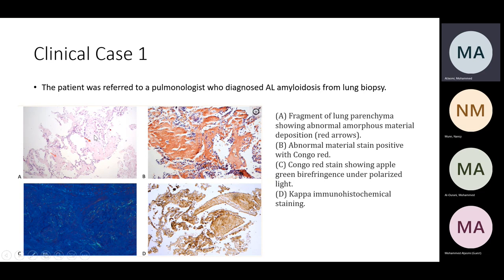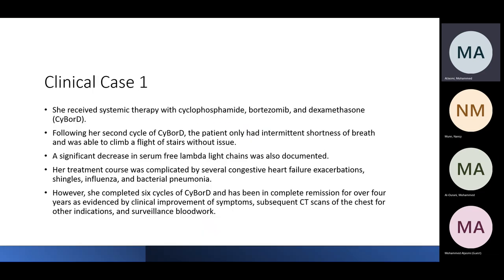The biopsy pathology showed hematoxylin and eosin staining demonstrating amorphous amyloid deposits. Congo red staining confirmed the diagnosis, and under polarized light, apple-green birefringence was seen. Immunohistochemical staining was performed for Kappa light chains. She was diagnosed with diffuse parenchymal lung disease secondary to AL amyloidosis. She received chemotherapy, improved, and was then placed under surveillance.